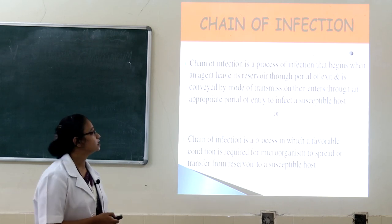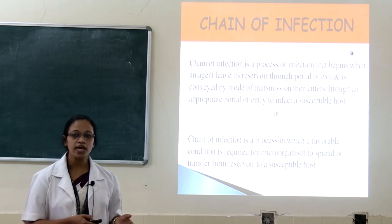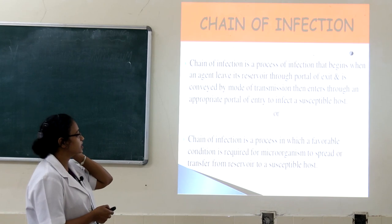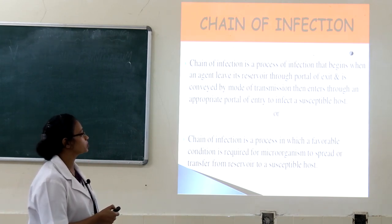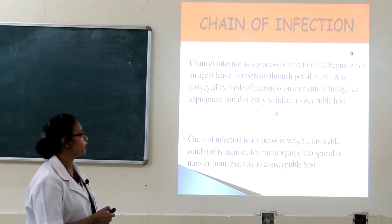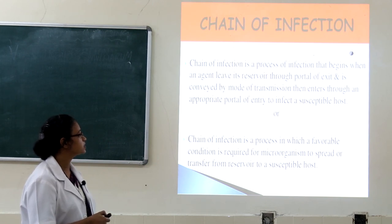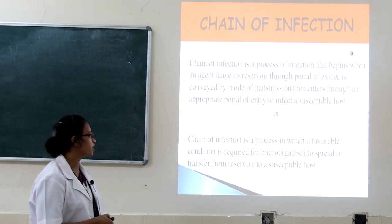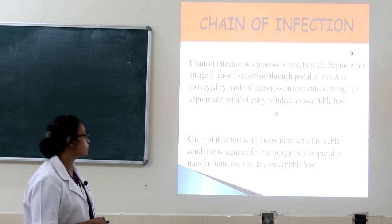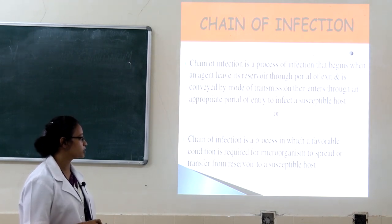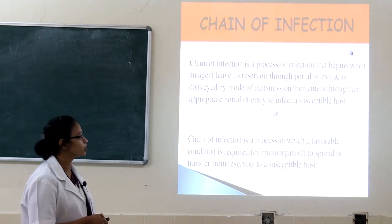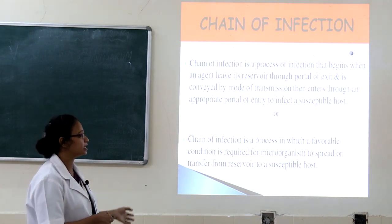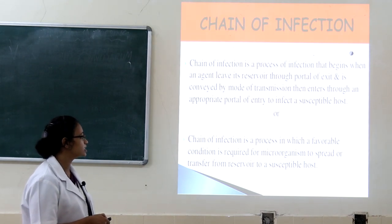Next we move to a new topic: chain of infection. The chain of infection is a process that begins when an agent leaves its reservoir through a portal of exit, is conveyed by a mode of transmission, and enters through a portal of entry to infect a susceptible host. In other words, a chain of infection is a process in which a favorable condition is required for a microorganism to spread or transfer from a reservoir to a susceptible host.